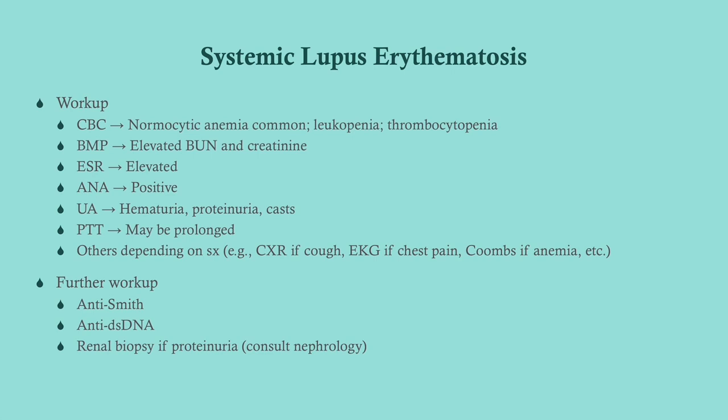What you'll usually see on CBC is a reduction in one of the cell lines — most commonly a normocytic anemia, anemia of chronic disease. BMP will often show an elevated BUN and creatinine. Sed rate and CRP will be elevated. ANA will always be positive in lupus. Urinalysis will show signs of nephritis in many cases. PTT may be prolonged. For further workup, get the anti-Smith and anti-dsDNA. If there's proteinuria, consult nephrology — a renal biopsy is where you're headed if there are signs of serious renal impairment.